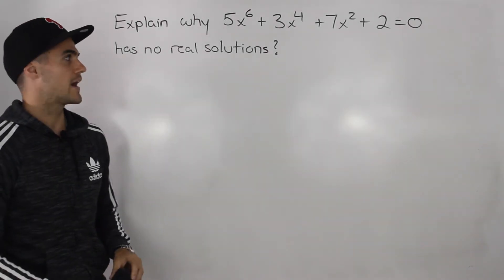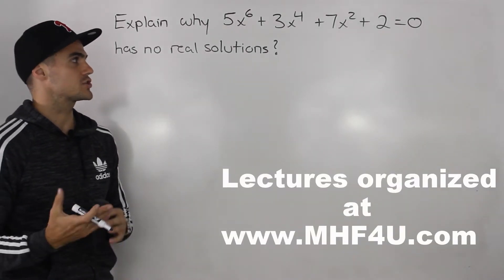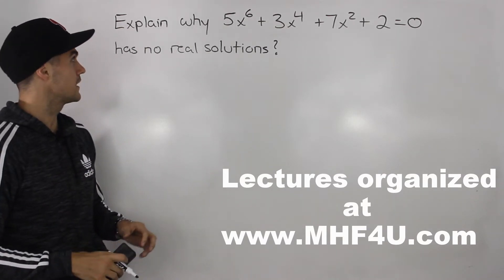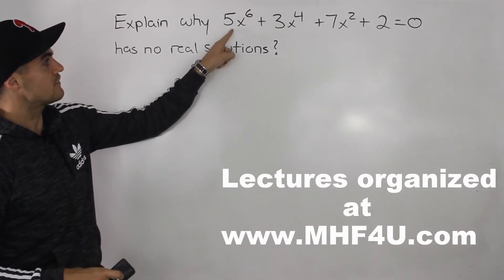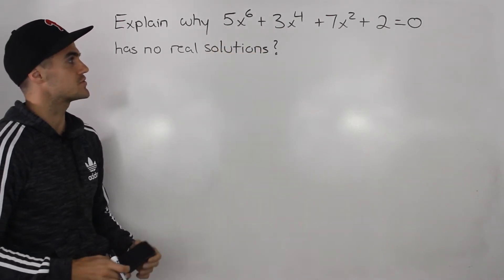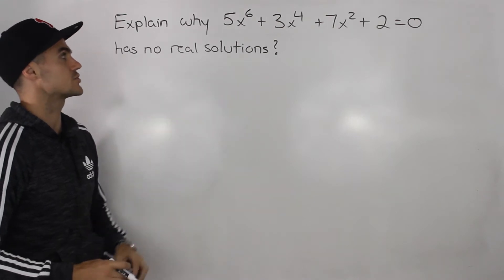What's up everybody? Patrick here. Welcome back. Moving on to another question. This question is more like a thinking or communication type of question. So explain why 5x to the power of 6 plus 3x to the power of 4 plus 7x squared plus 2 equals 0 has no real solutions.